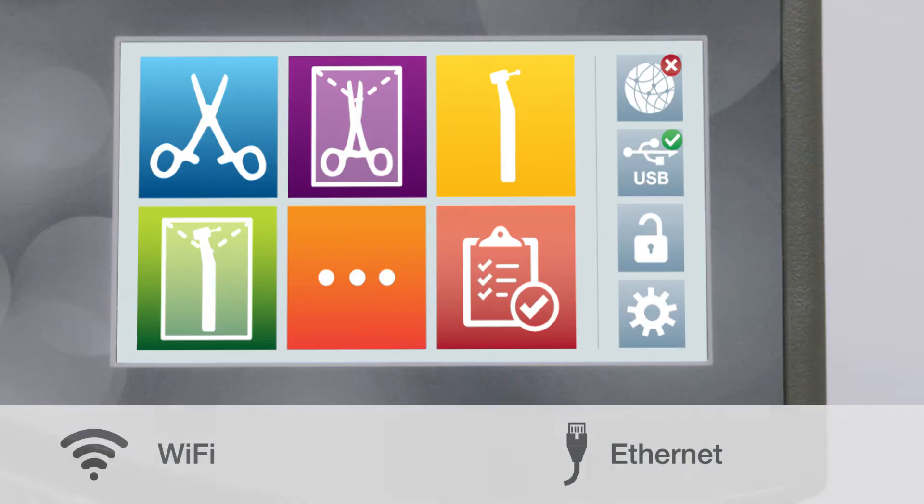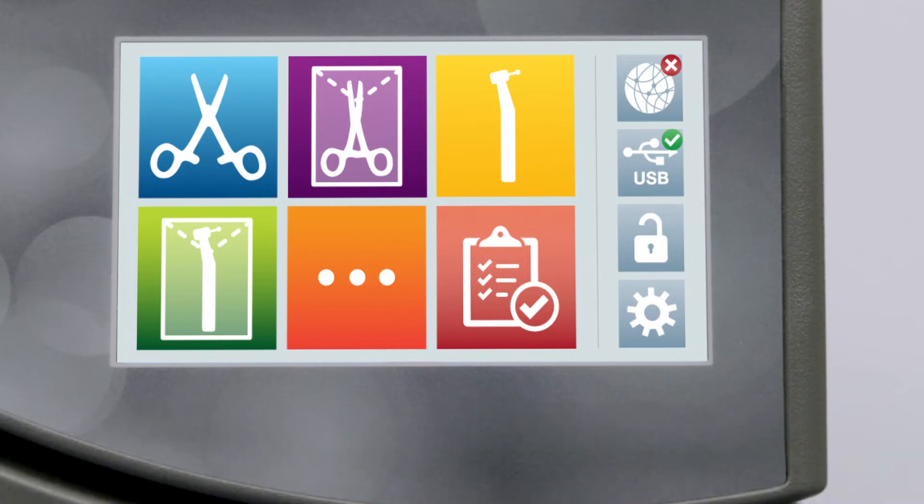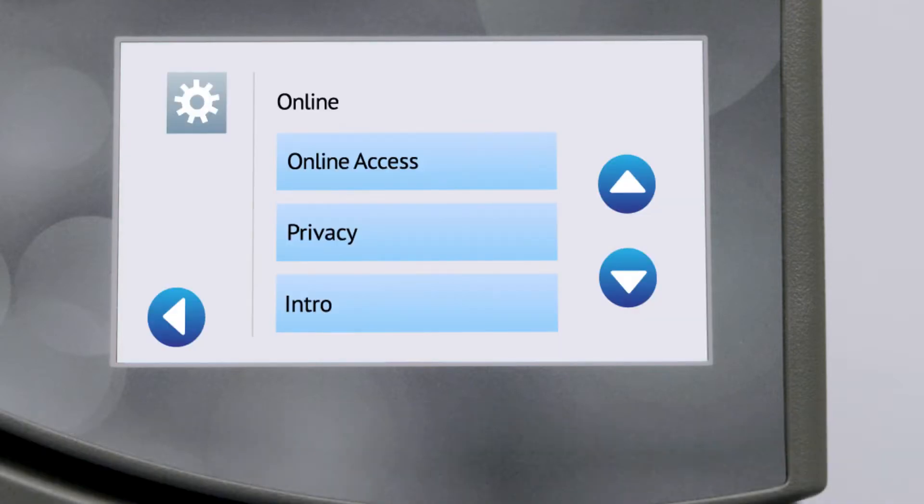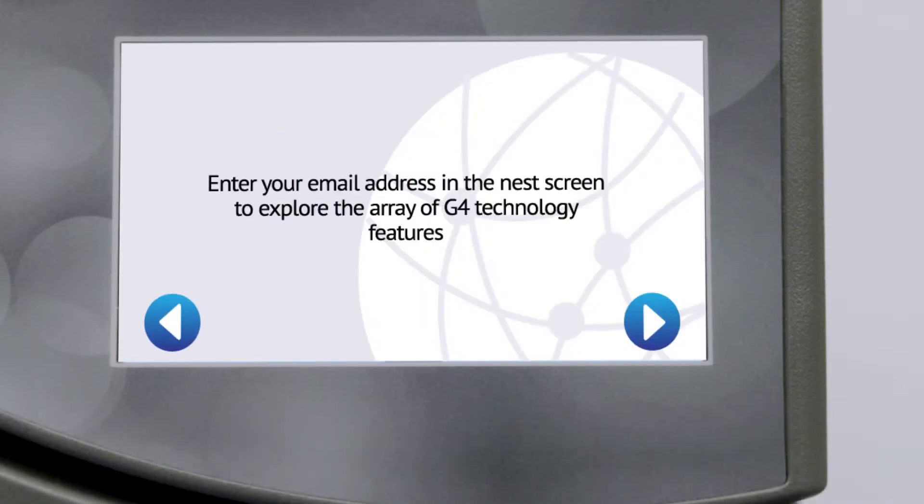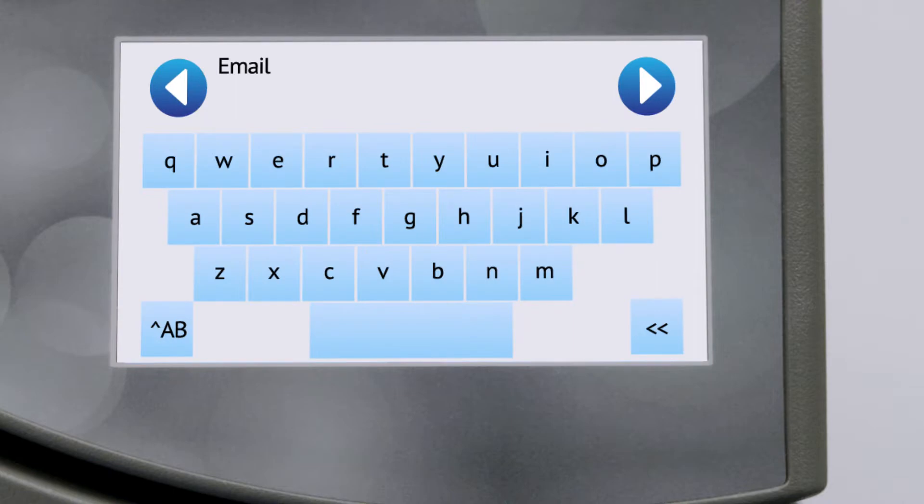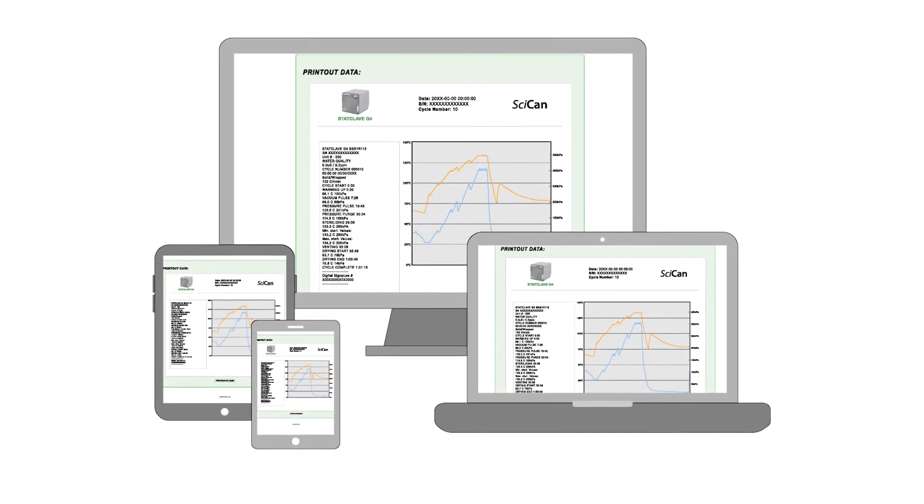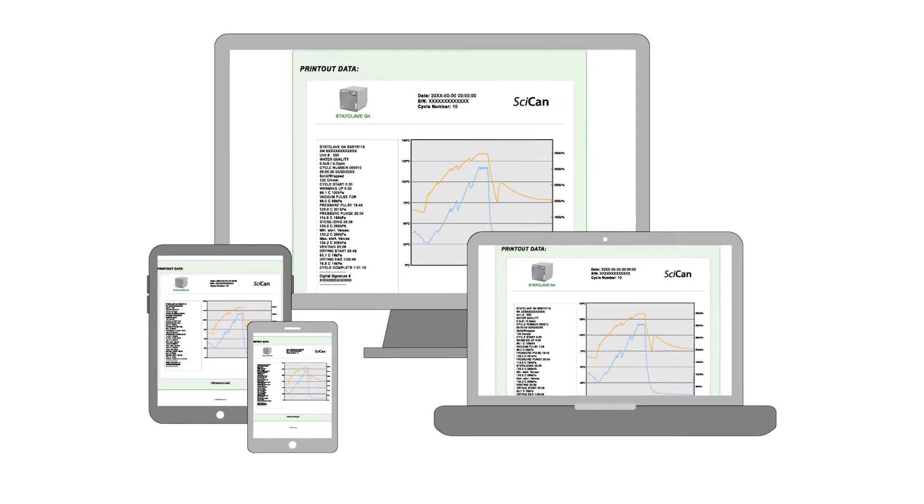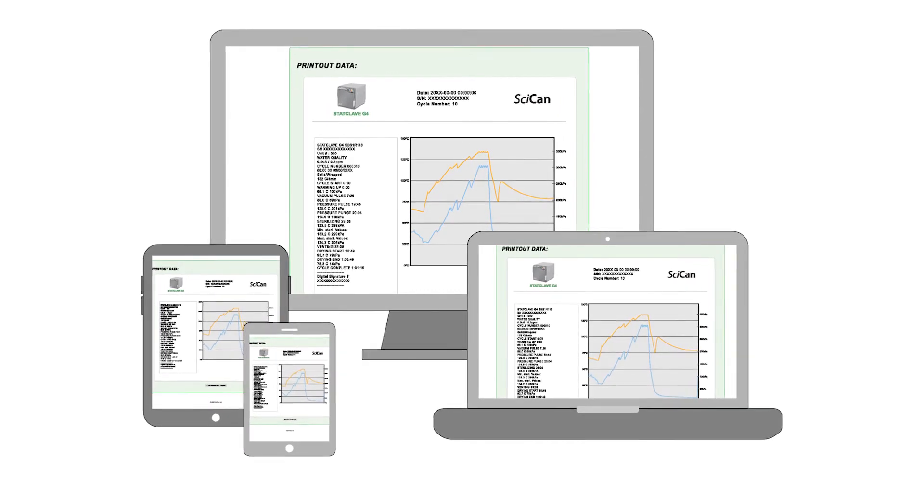If your StatClave has not been connected to the G4 network, consult your operator's manual to connect by using a wireless network or ethernet connection in a few simple steps. Once you've completed the online registration, you will be able to view all of your StatClave's records through your browser or have cycle records directly emailed to an office email address.